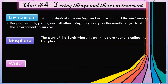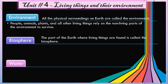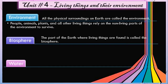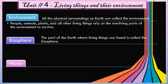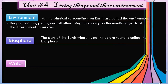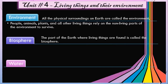Biosphere. As we know, there are four layers of earth: lithosphere, hydrosphere, atmosphere, and biosphere. The part of the earth where living things are found is called the biosphere. Which layer is called biosphere? The one where living things are found.